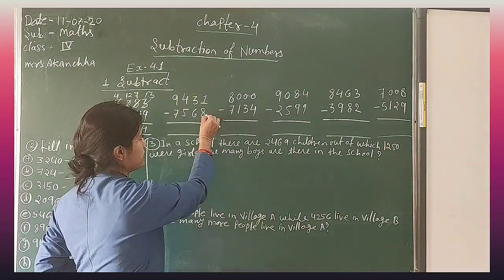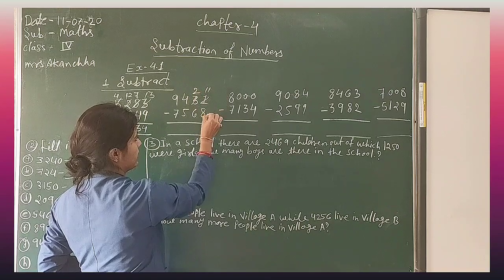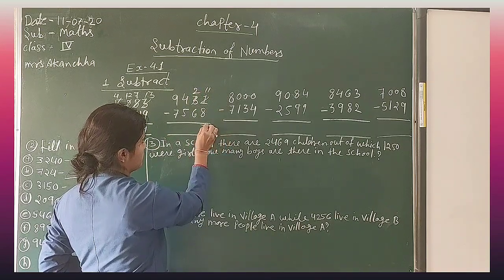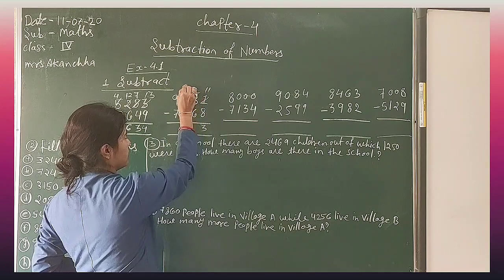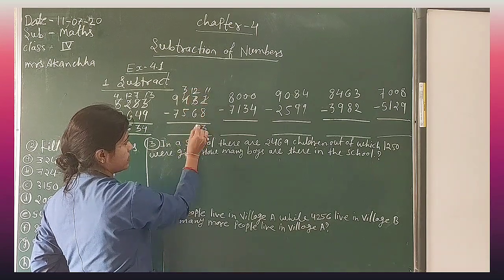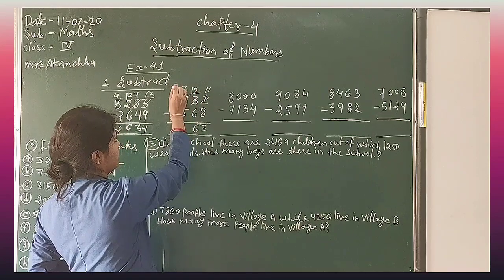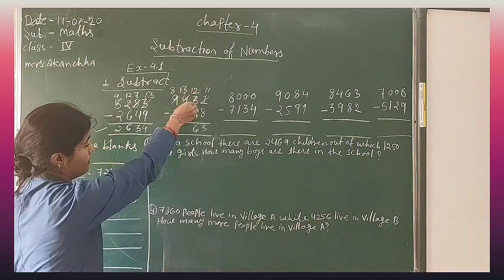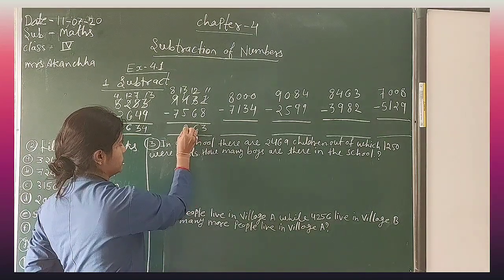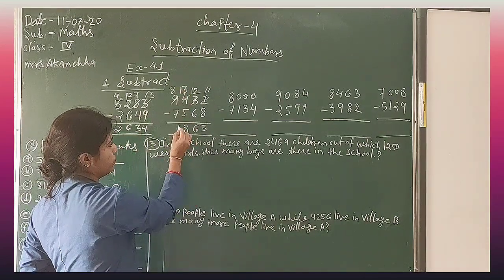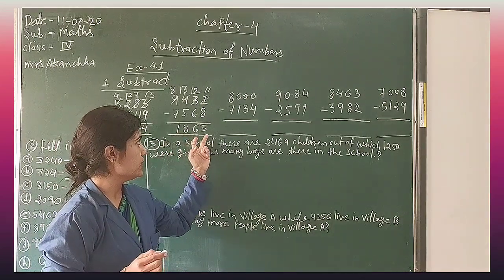Next: 1 minus 8 — borrow. 11 minus 8 is 3. And 2 minus 6 — again borrow, then 12. 12 minus 6 is equal to 6. 3 minus 5 — take care. Then 30 minus 5 is 8. 8 minus 7 is 1. You will get the answer: 1863.